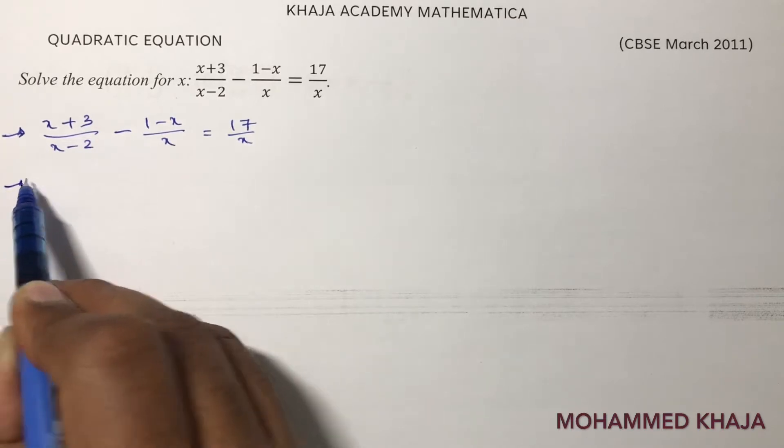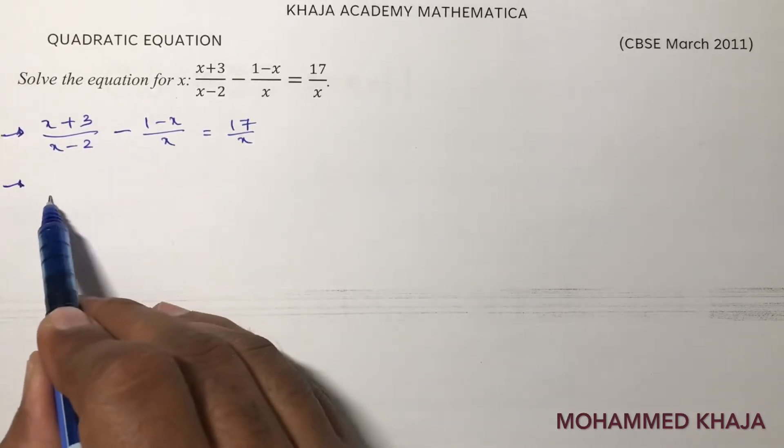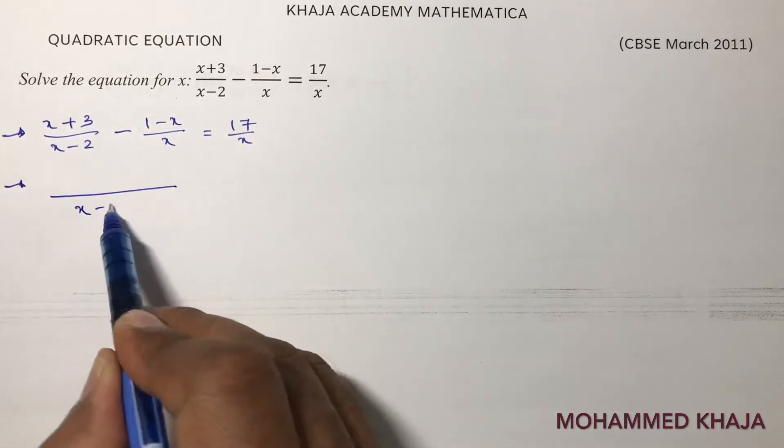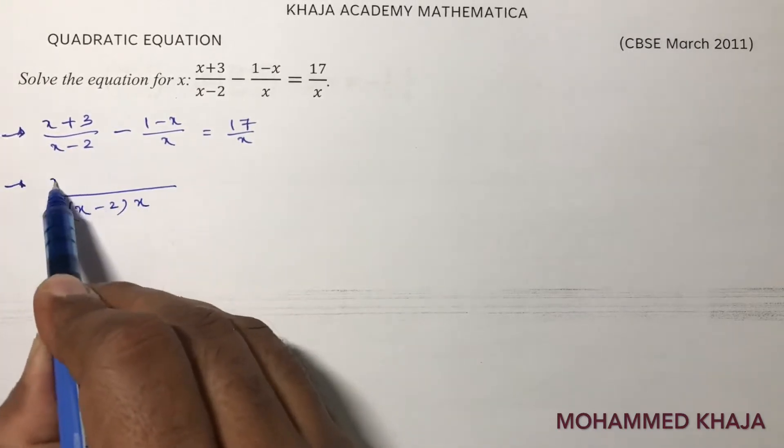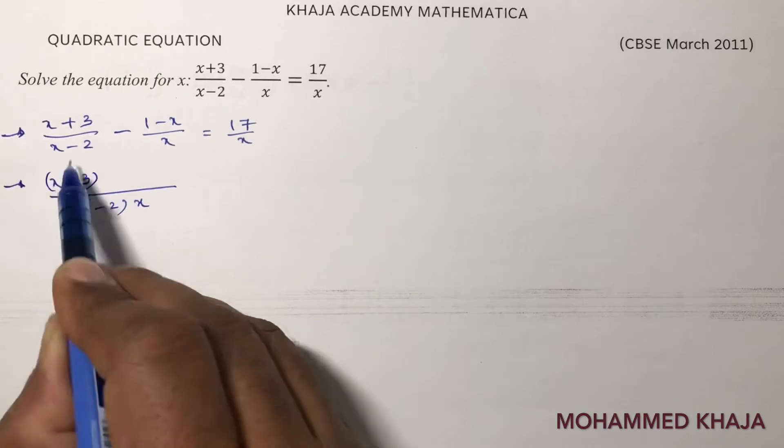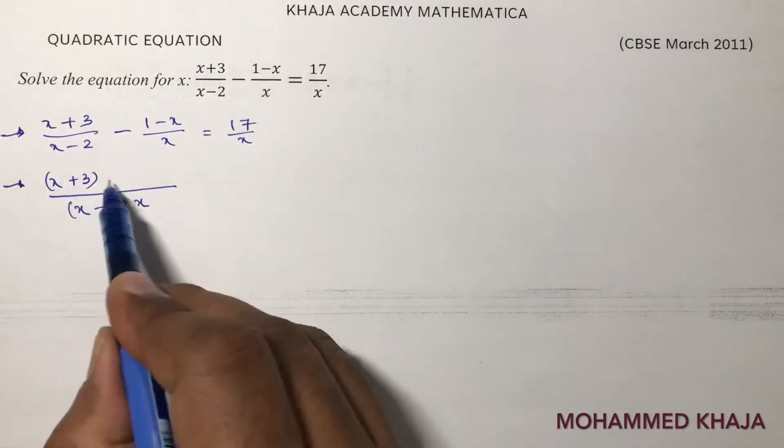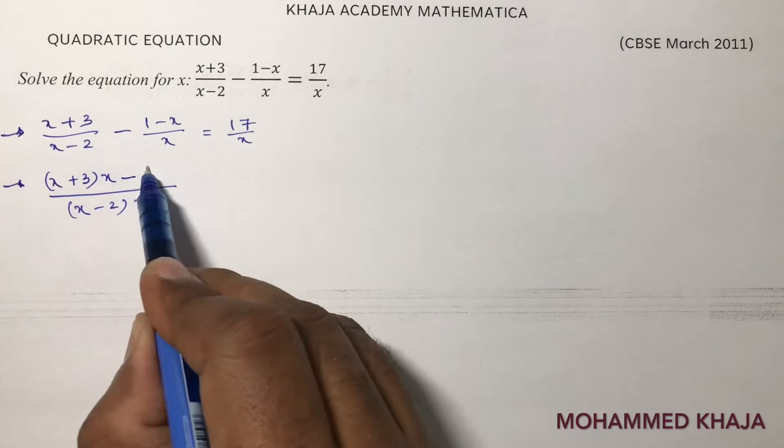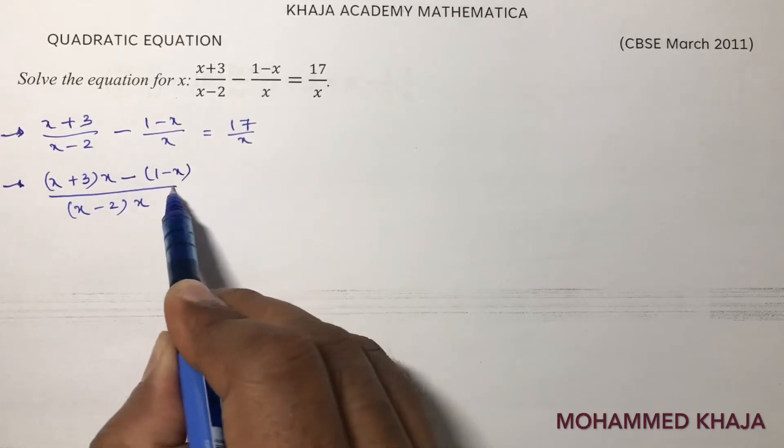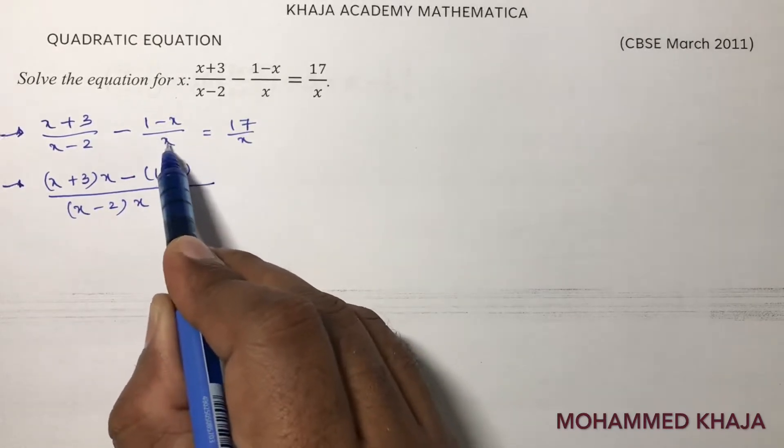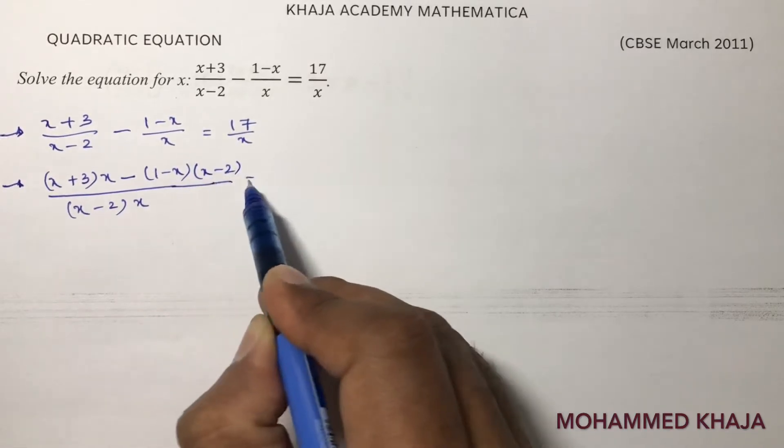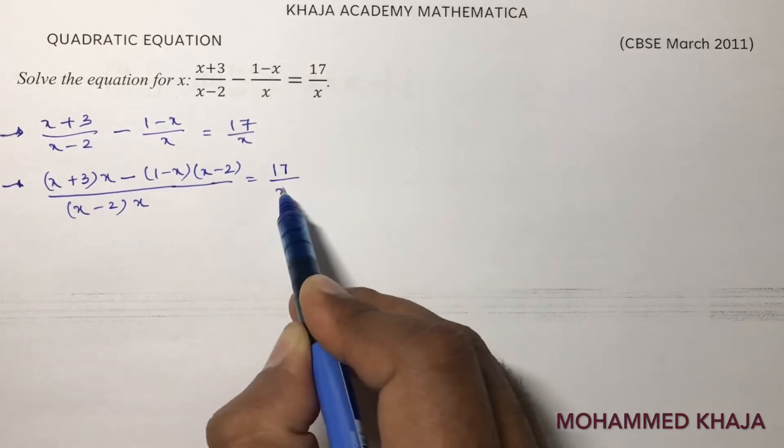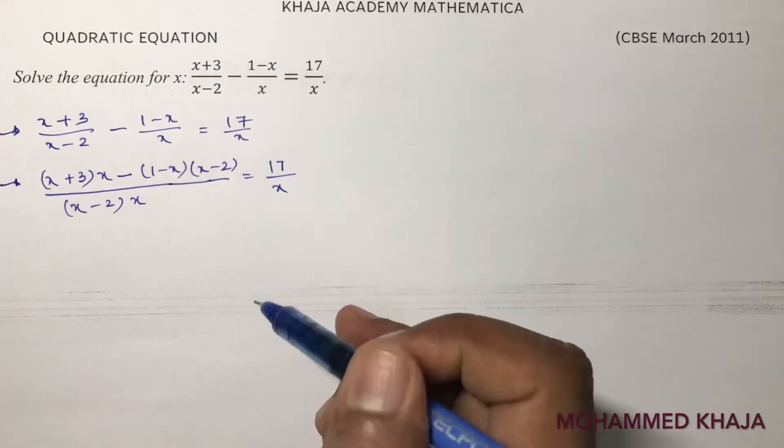Now here take LCM in these two terms. So x minus 2 into x. So here x plus 3 in the denominator I have x minus 2 so I will multiply x here, so into x minus 1 minus x. Here in the denominator I have x so I will multiply x minus 2 here equals 17 by x.